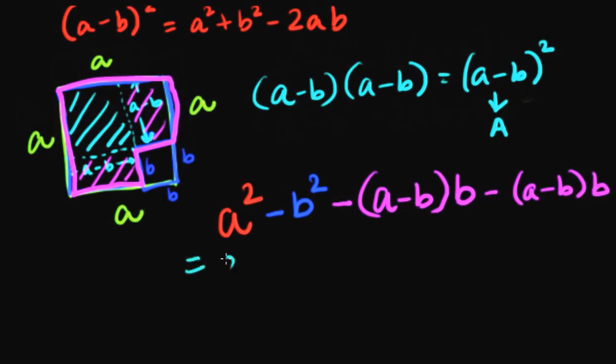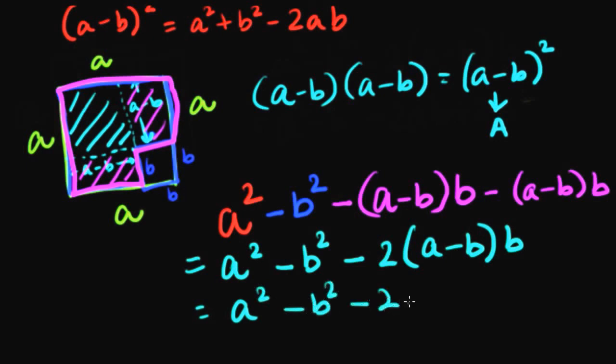So if I go on to solve this, it is a square minus b square minus two times a minus b into b. That is a square minus b square minus 2ab plus 2b square.